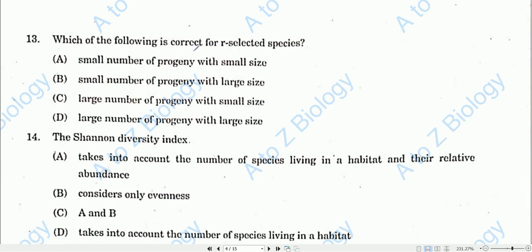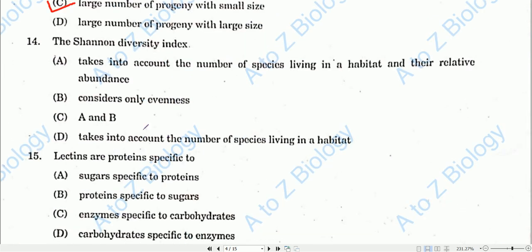Question number thirteen: For R-selected species, there are two kinds of selection — R selection and K selection. R-selected species have a large number of progeny with small size, while K-selected species have fewer progeny with large size. For R-selected species, large number of progeny with small size is correct. Option C will be the correct one.